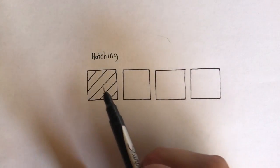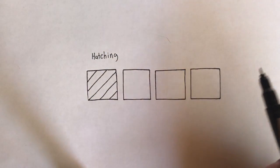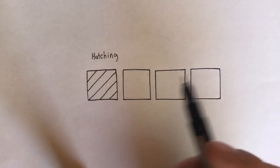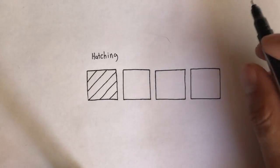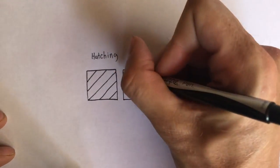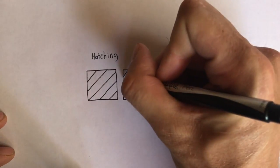So to make our hatch lines appear darker as we get further to the right, I'm just going to put them closer together. So that's going to mean more work and more lines. So the next box, we don't want to go too close too soon.